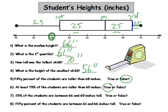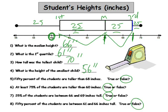25% of the students are between 66 and 69 inches — that is true, 25% are between 66 and 69 inches. 50% of the students are between 61 and 66 inches — that's false. Only 25% of the students are that height.